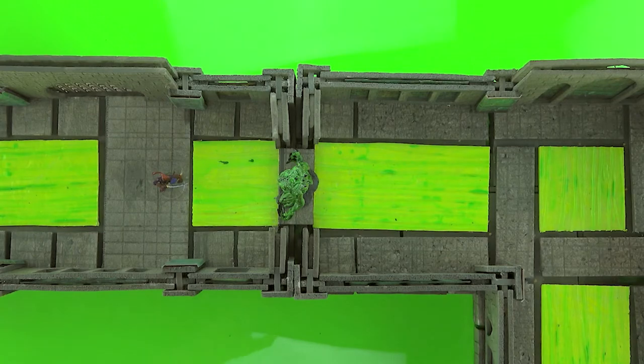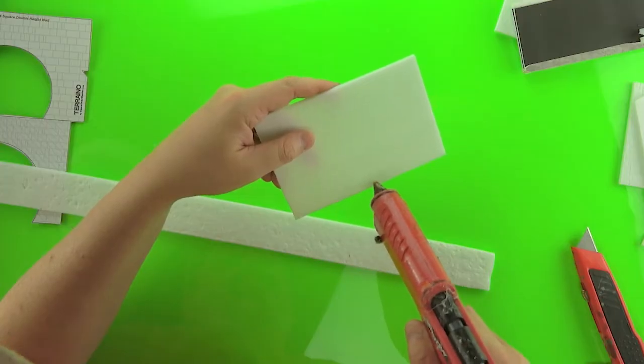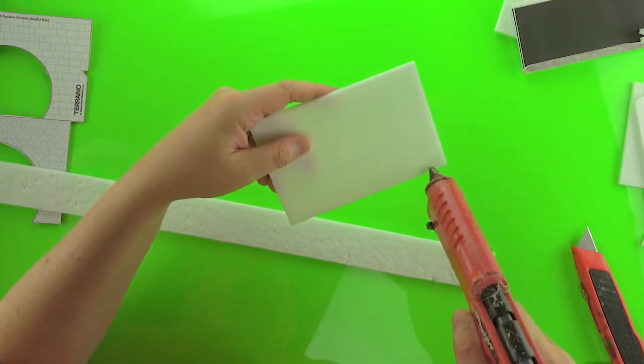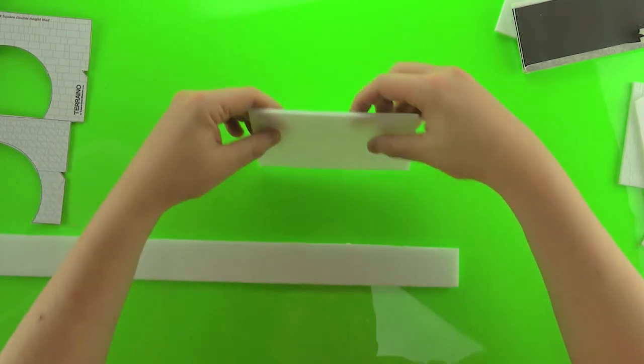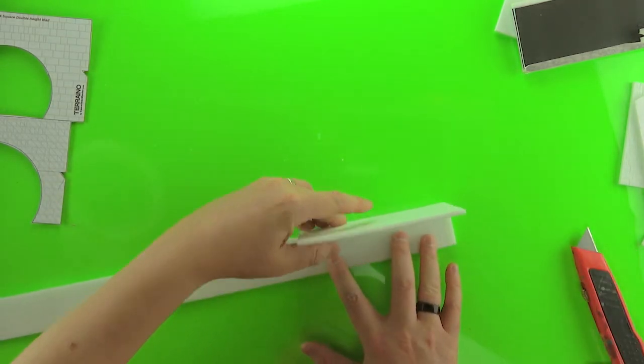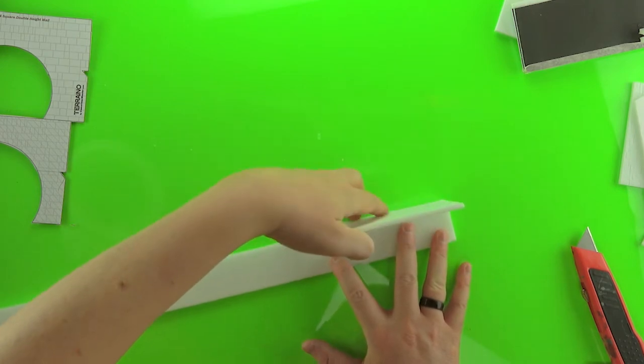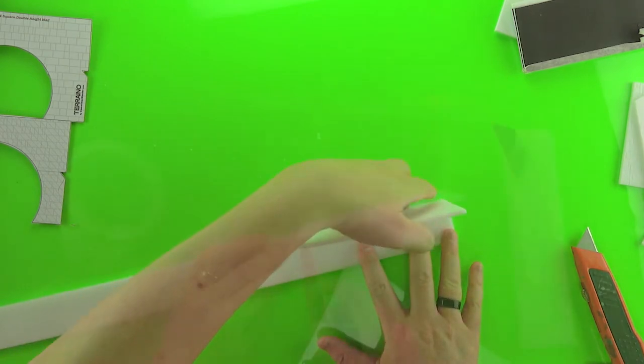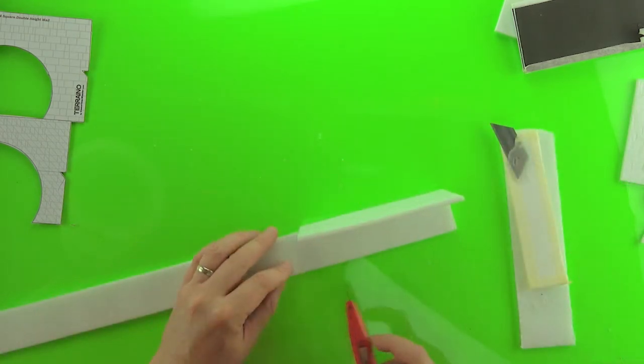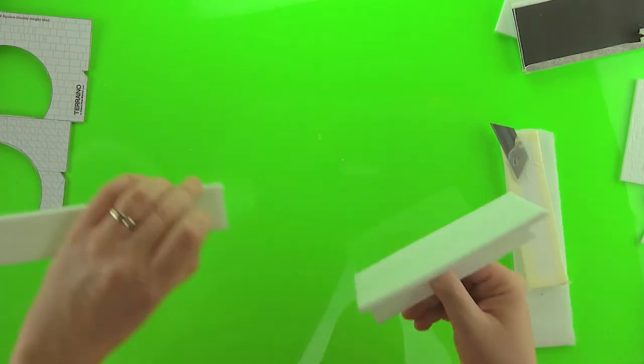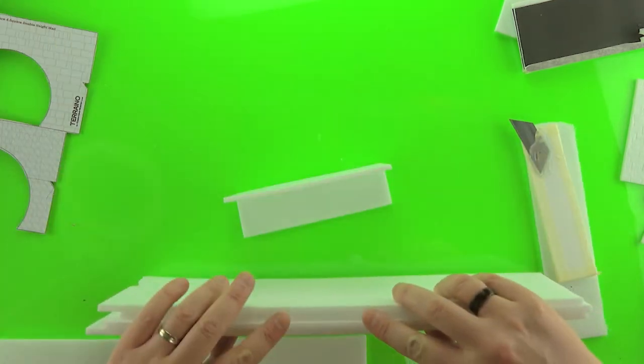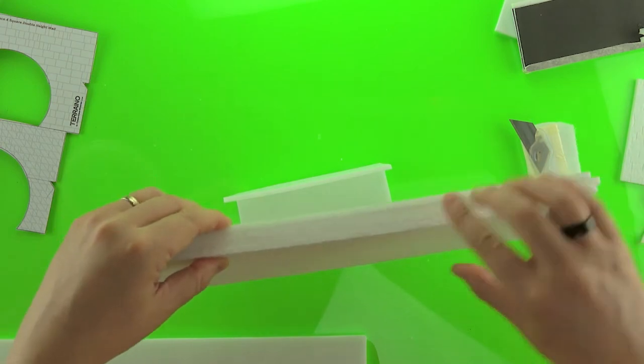We'll start by gluing two pieces of textured foam together. This is going to make one of the sides and the top of the connector piece. And just kind of rough cut it to length. This is longer than you're going to need, we're going to trim it down later.